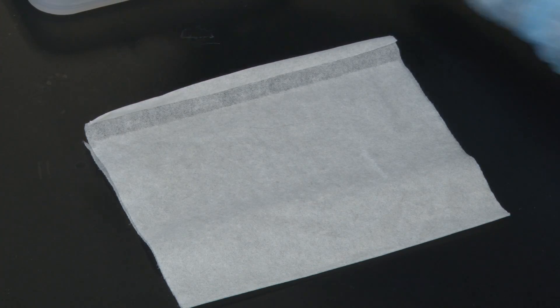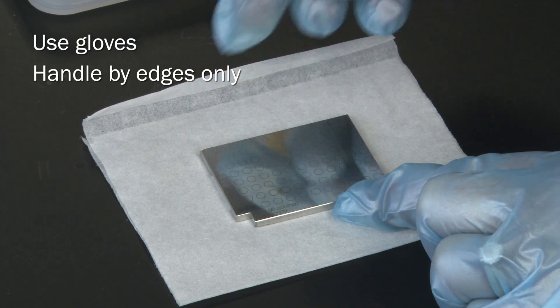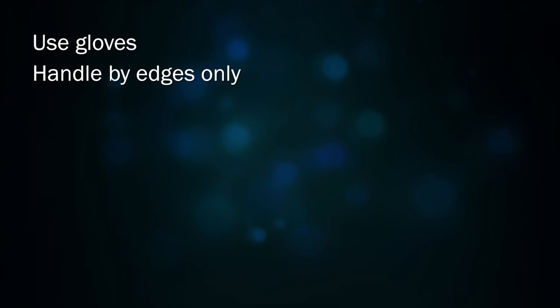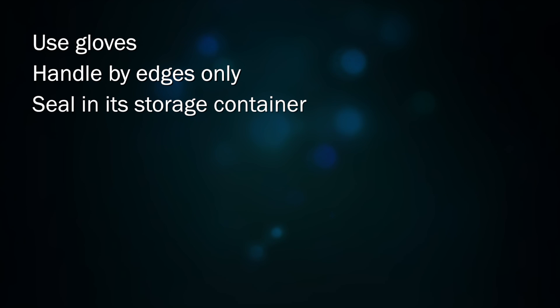From this point forward, only handle the target plate on its edges with your gloved fingers. To avoid contamination by dust, keep the plate sealed in its storage container until it's ready for use. Lab coats are a consistent source of dust and other microscopic debris. Your street clothes are often more clean than a lab coat.